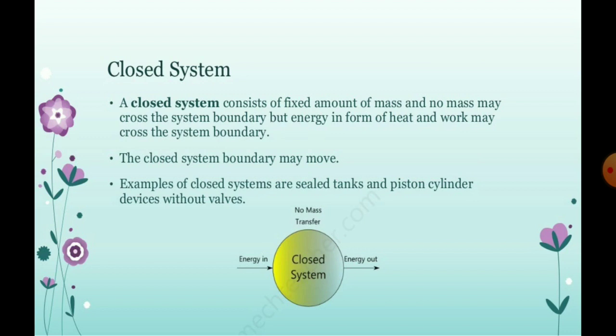What is closed system? A closed system consists of fixed amount of mass and no mass may cross the system boundary, but the energy in the form of heat and work may cross the system boundary. The closed system boundary may move and examples of closed systems are sealed tanks and piston cylinder devices without valves.